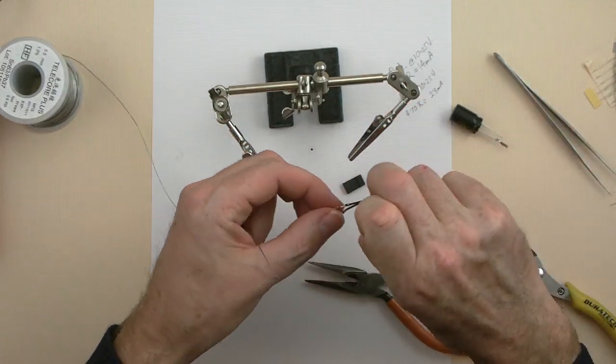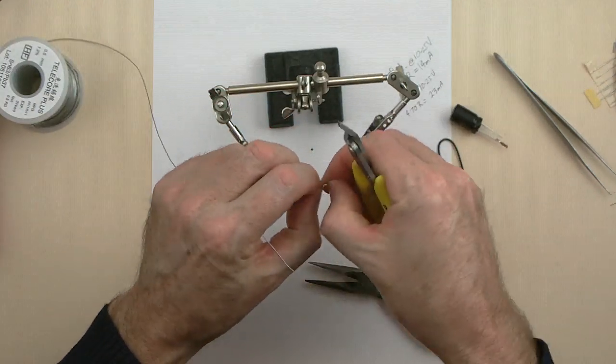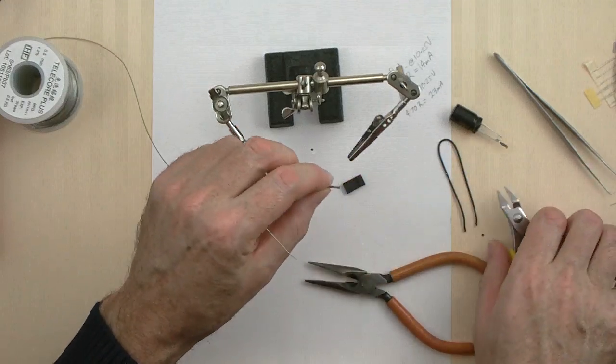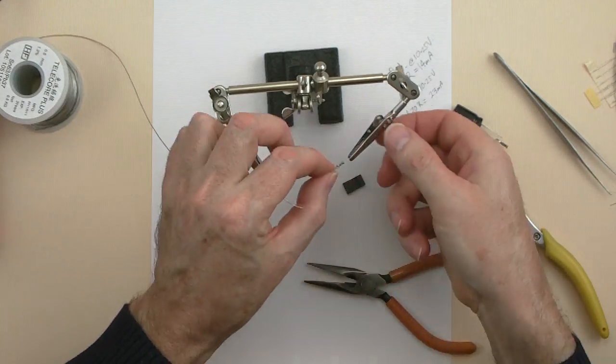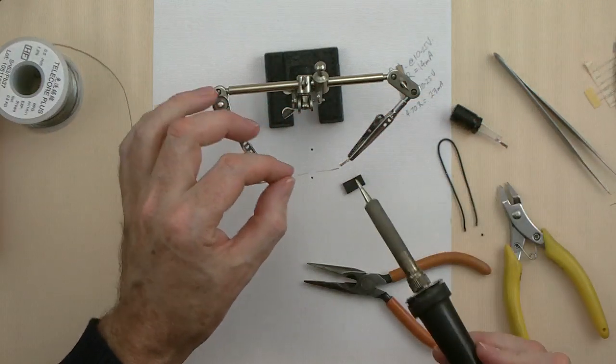Now we get our other connector. Trim off the wire. Pull off the plastic. Apply some solder.